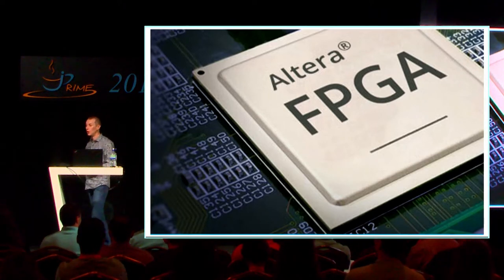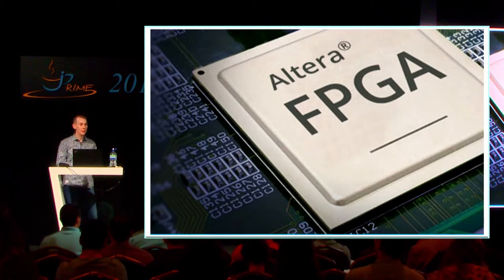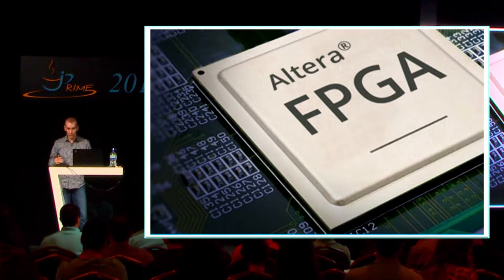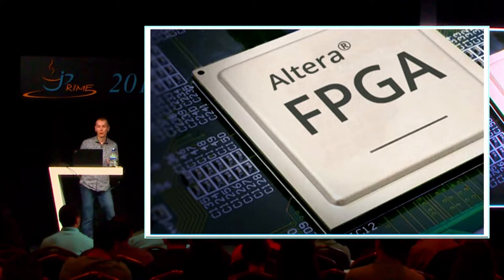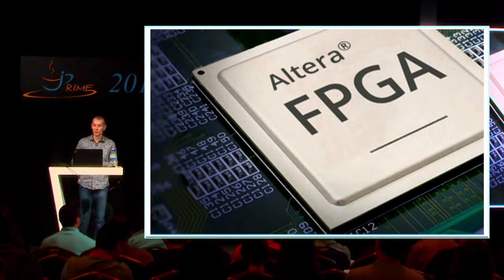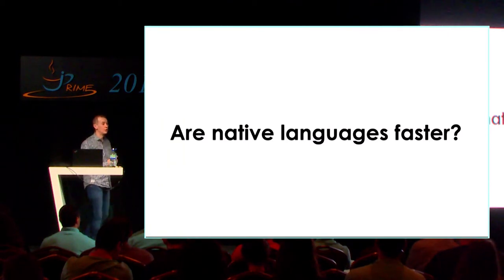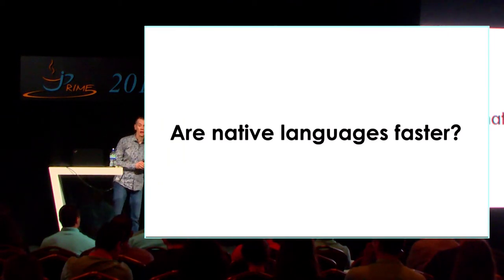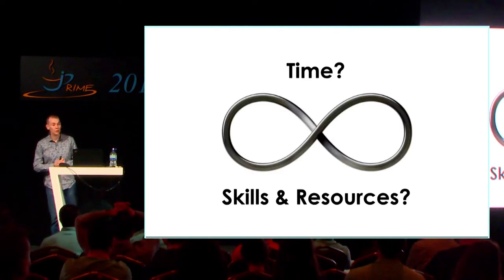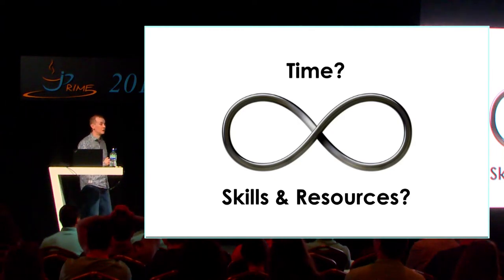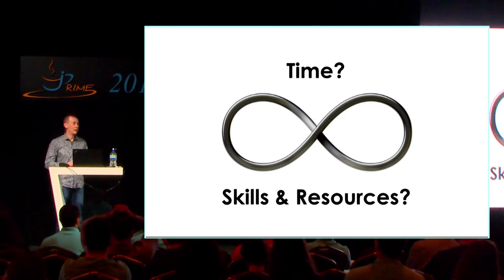If you want to be the absolute fastest, it's actually not even a debate about languages. You tend to be doing this in hardware — FPGAs, programming the hardware that runs in the network switches themselves. You would not be writing C even to do this. So if I'm writing code that will run in a language, the obvious question is: are native languages faster than languages run on managed runtimes? The answer is basically yes, if you have infinite time, infinite skills, and infinite resources.